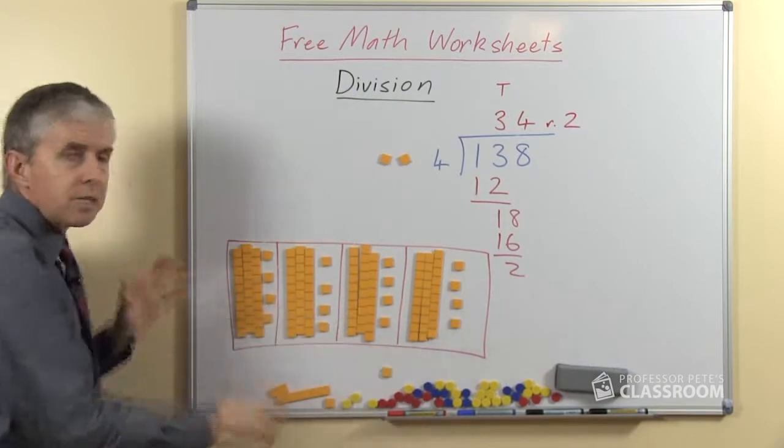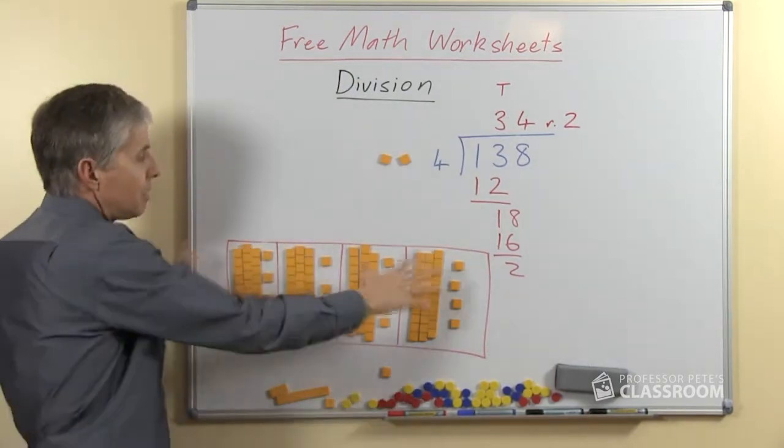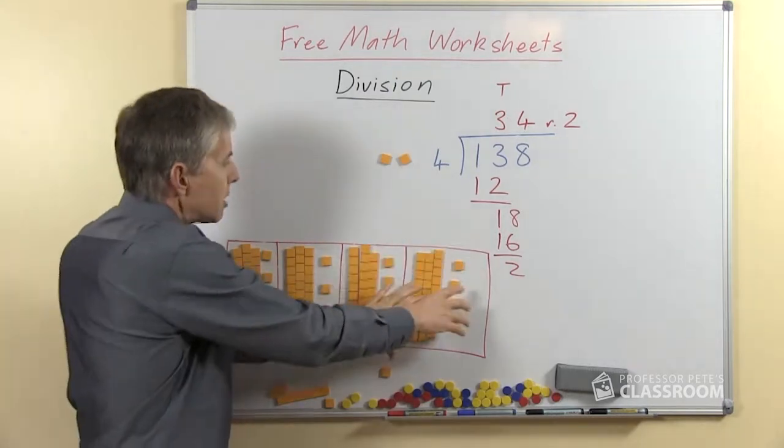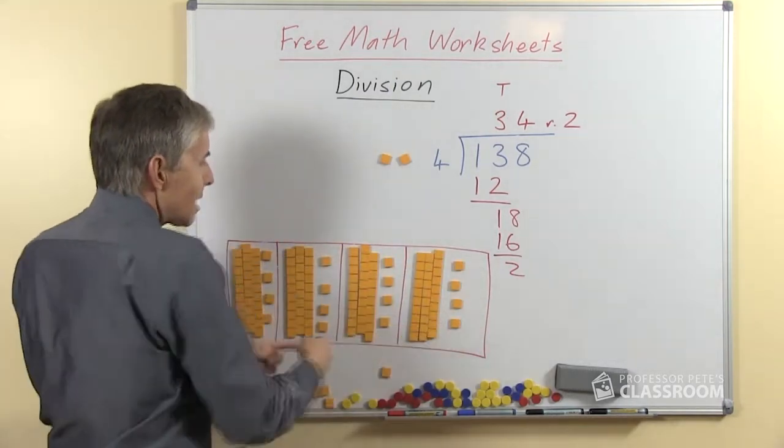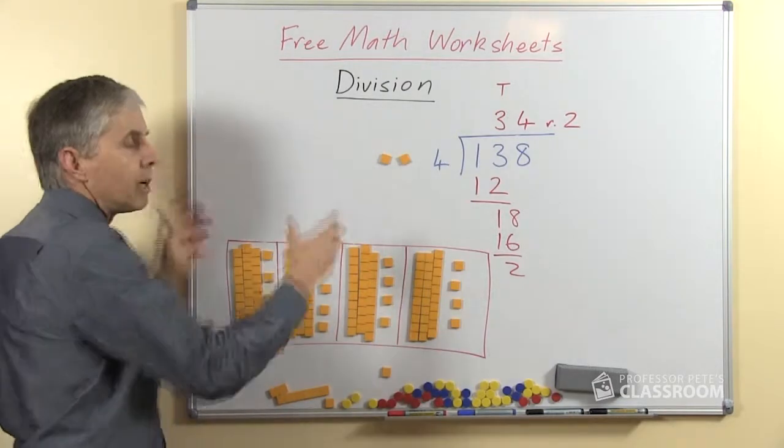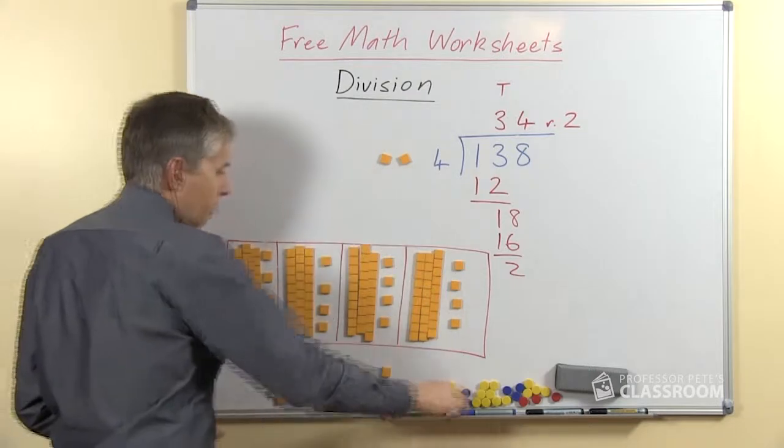Now you can see from this arrangement down here that with the base-10 material it illustrates the answer. You can see 34 in each space, you can see that that's the 138. You could conceivably push it all back together and regroup and make it back into 138. There's 2 left.